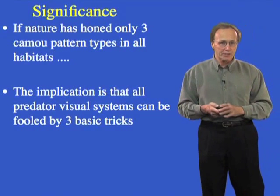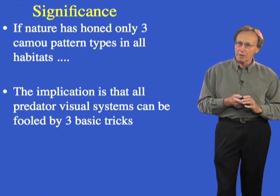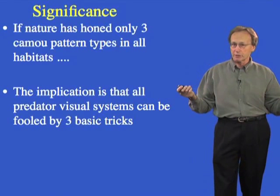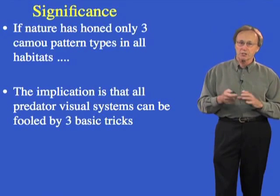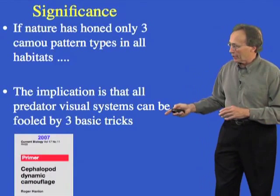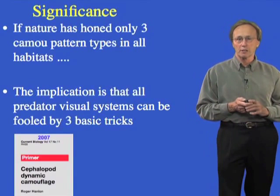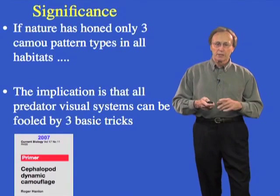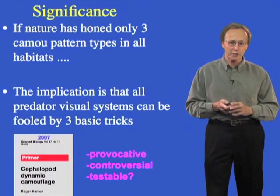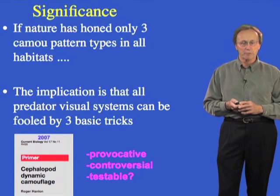The big significance of this, if in fact — and it's not fact yet — there are only three camo pattern types, is that the amazing diversity of visual systems on this planet can be tricked to some degree by just three or four pattern types. In this publication from 2007, I posited some of these ideas based on our collective work on cephalopods and whether this might apply on a larger scale. This is a provocative and controversial idea, but it's testable to some degree, and I will present some of those tests today.